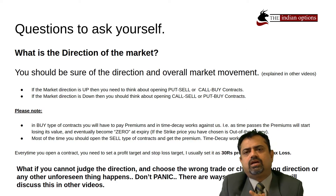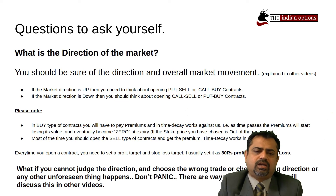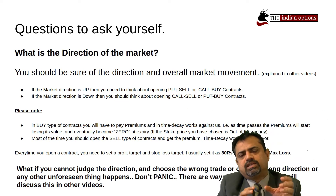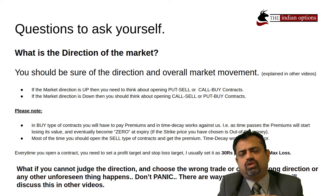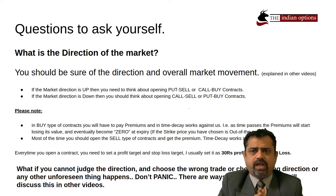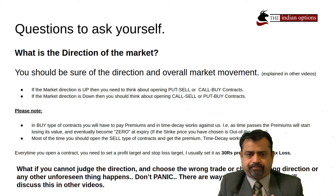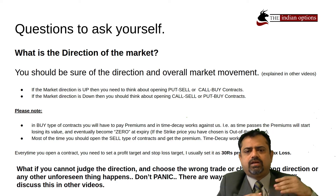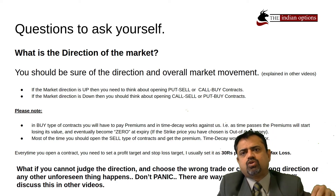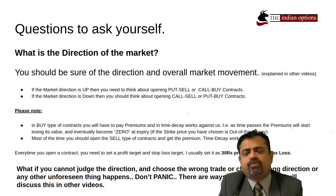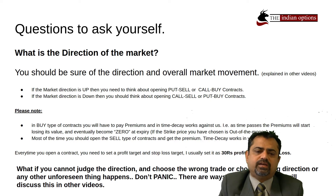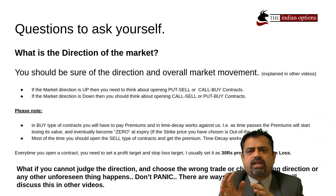Remember that when you open put buy or call buy type of contracts and you have chosen a strike price that is out of the money, the premiums are going to go to zero — so you will lose whatever premium you paid. When you open a sell-type contract (call sell or put sell), you collect the premium, and if the options expire out of the money, you keep all the money.